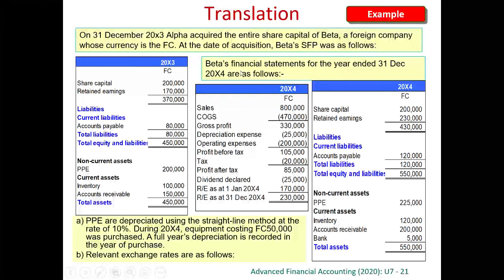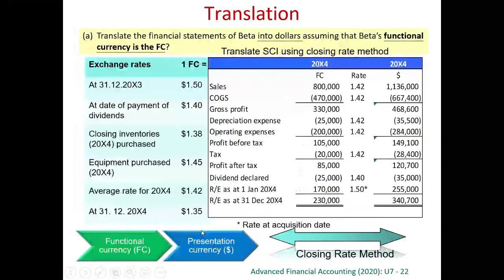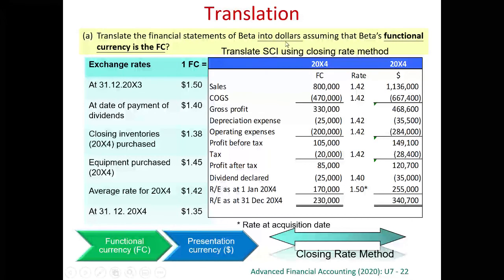Now it is 31st of December 2004, one year after. We have got the financial statements here, and we have got additional information for the property, plant and equipment. For part A, we are asked to translate the financial statement of Beta into dollar so that we can prepare our consolidated financial statements. To consolidate in dollar, we must translate everything into dollar. Here we assume that Beta's functional currency is FC.